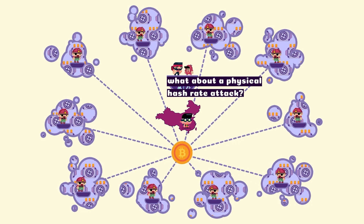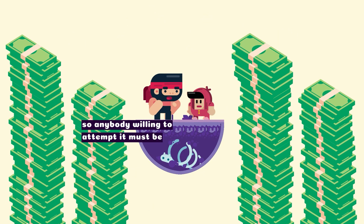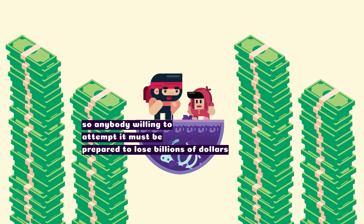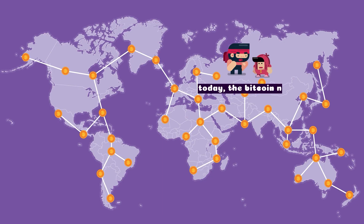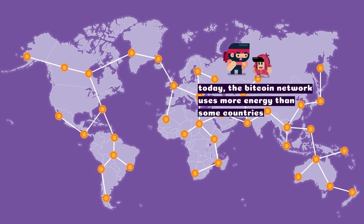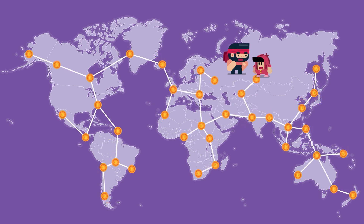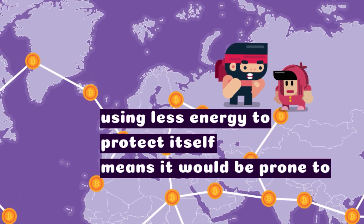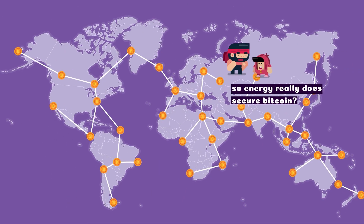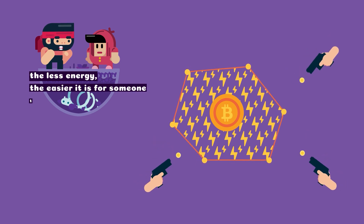What about a physical hash rate attack? This type of attack is far more expensive, so anybody willing to attempt it must be prepared to lose billions of dollars. To date, the Bitcoin network uses more energy than some countries. It uses more energy than countries? It's not crazy — it means it's working. Using less energy to protect itself means it would be prone to more attacks. So energy really does secure Bitcoin? Yes. The less energy, the easier it is for someone to control it.